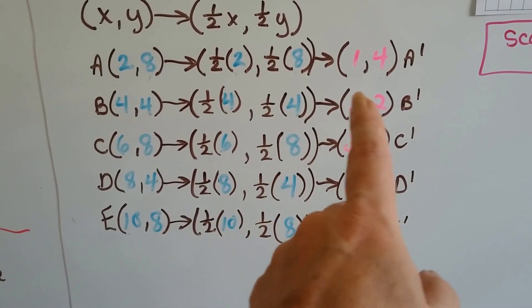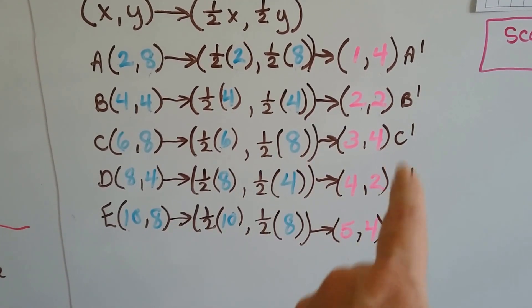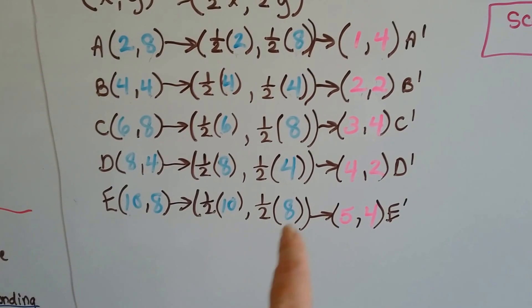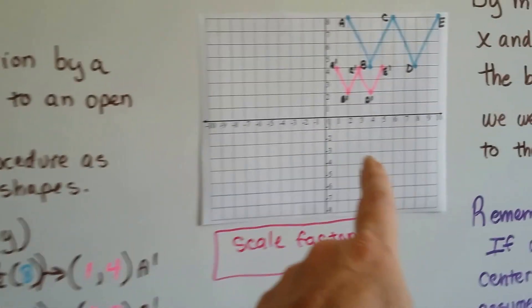Half of 4 and 4 is 2 and 2. Half of 6 and 8 is a 3 and a 4. Half of an 8 and a 4 is a 4 and a 2. Half of a 10 and an 8 would be a 5 and a 4. We've got them all plotted.